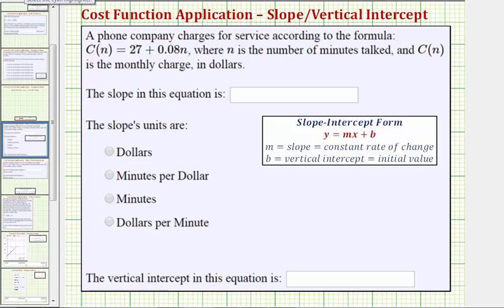In general, when we have an equation in slope-intercept form with a form of y equals mx plus b, m, the coefficient of x, is equal to the slope, which represents the constant rate of change, and b, the constant term, is equal to the vertical intercept, which represents the initial value.